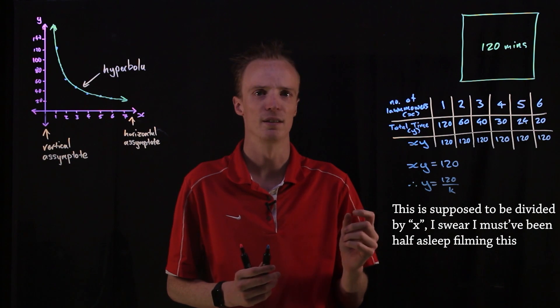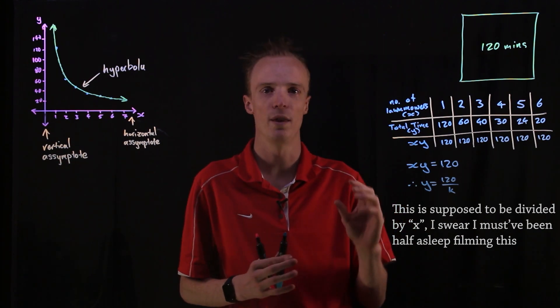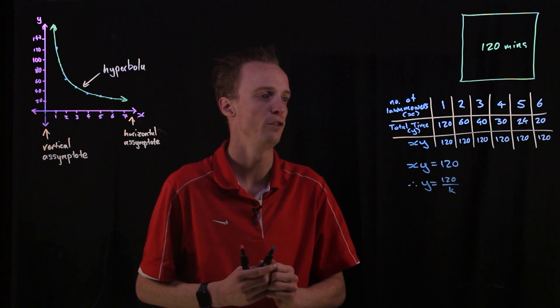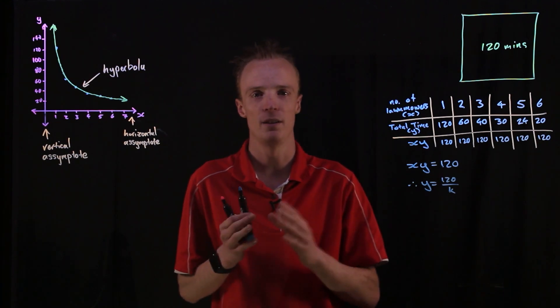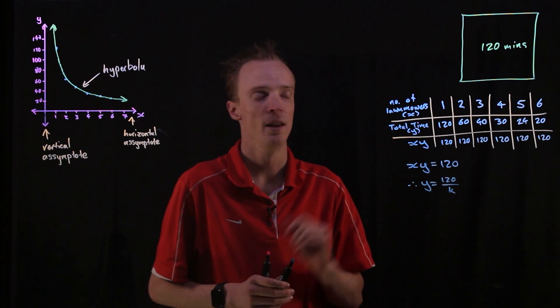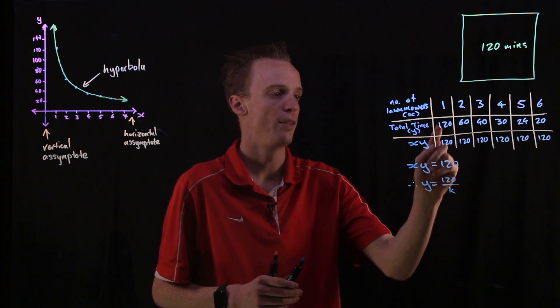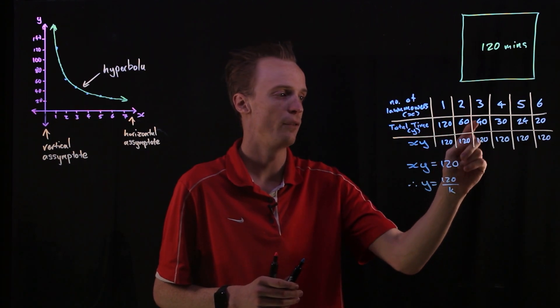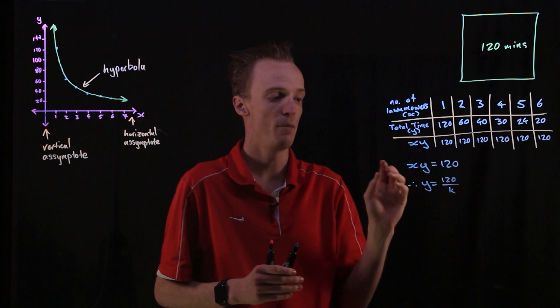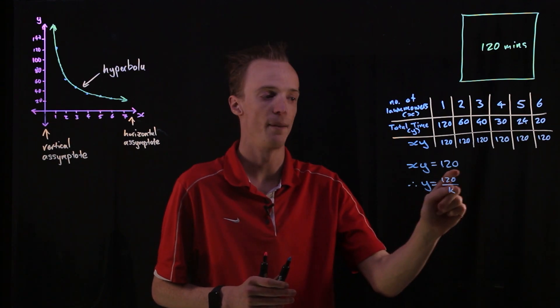Now, in essence, this is how we tell whether two variables are inversely proportional. For two variables to be inversely proportional to one another, we should be able to multiply these two values together every single time. And no matter what, it equals the same value.